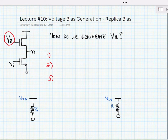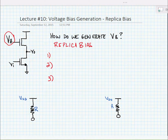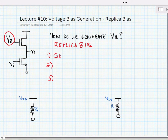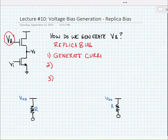We're going to use a replica bias. For a replica bias, we're going to generate a current somewhere on the chip, and then we're going to push the current into a diode connected load.